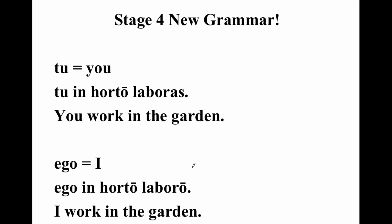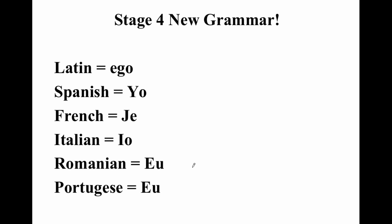Now let's mix it up a little. 'In horto' means 'in the garden,' and 'laborat' means 'he/she/it works.' So 'tū in horto laboras' means 'you work in the garden,' and 'ego in horto laboro' means 'I work in the garden.' Now look at something amazing — the Latin word ego in the five major Romance languages has done very poorly. Ego becomes yo in Spanish, je in French, io in Italian, yo in Romanian, eu in Portuguese. But tū has remained the exact same word in all the Romance languages — it is the only Latin word that is exactly the same as its Latin original in all of the Romance languages.